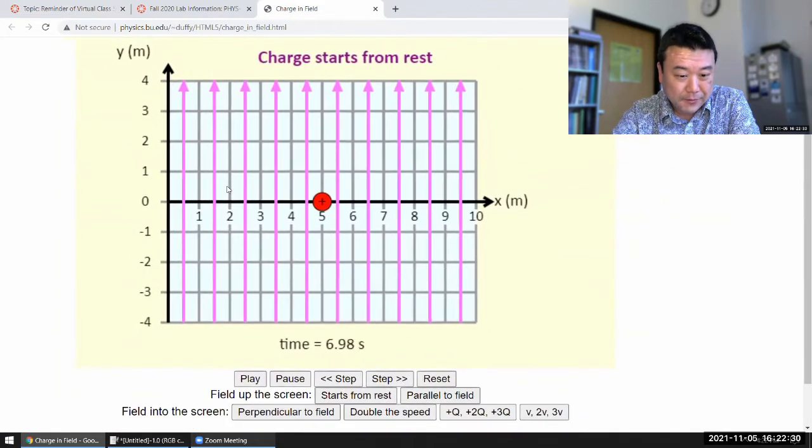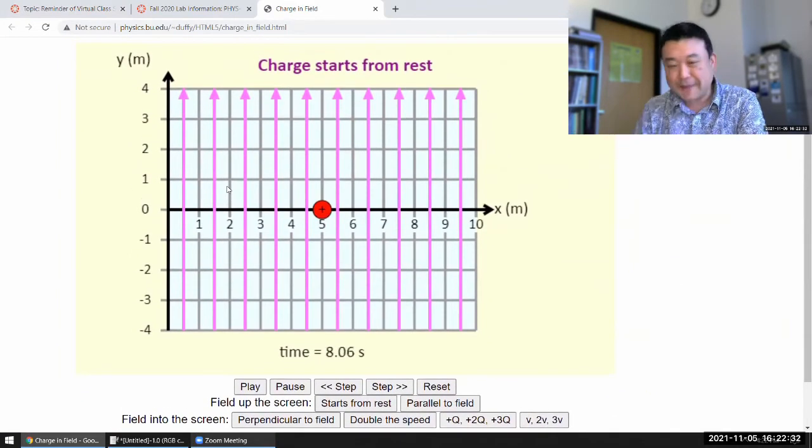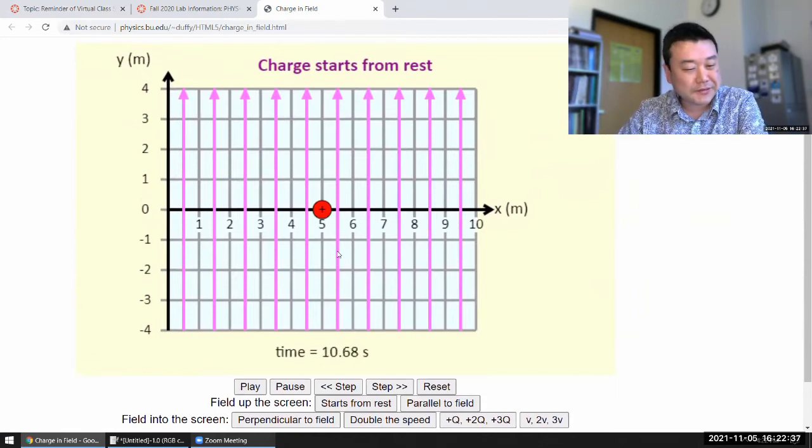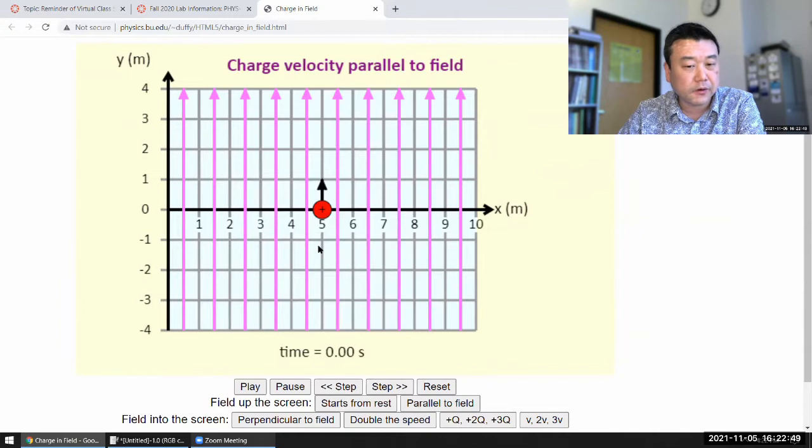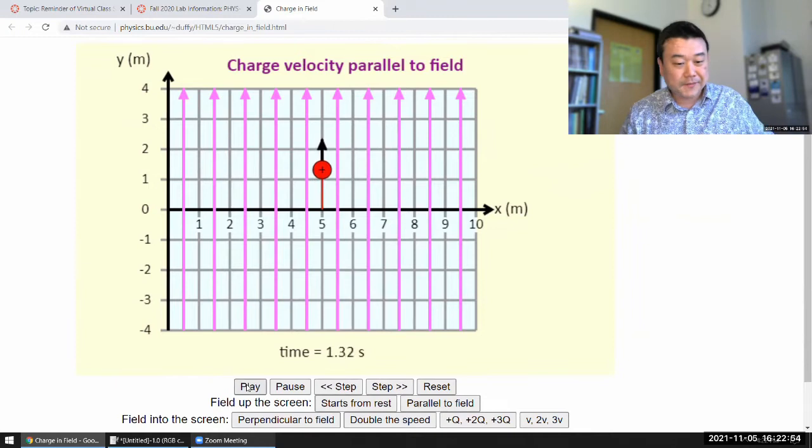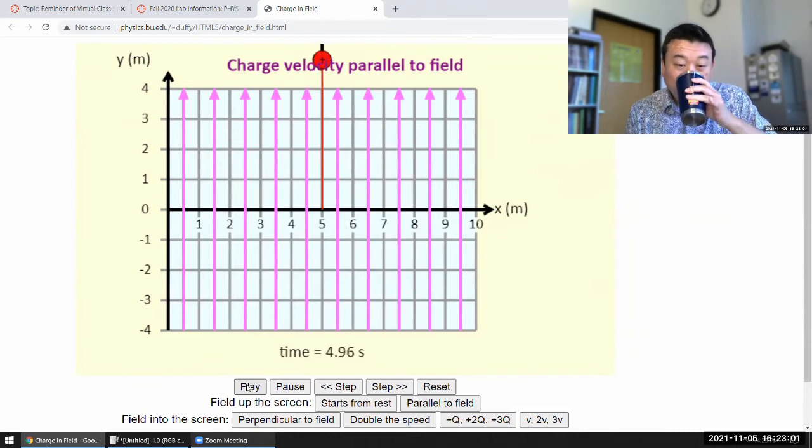Right now what I'm simulating is nothing's happening. The charge is at rest. There's no magnetic force, so nothing's happening. We can make it more interesting. The charge could be moving relative to the field, or it could be moving parallel to the field. That also, nothing really interesting happens. Charge system moves. It looks like it's moving under zero net force.